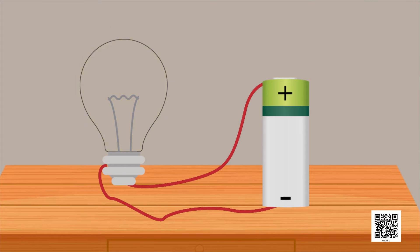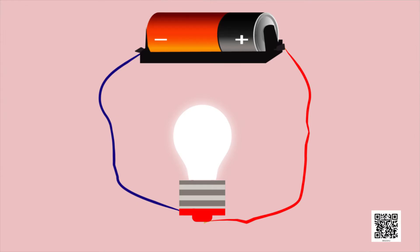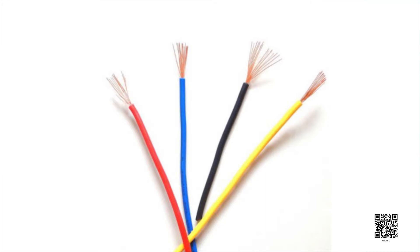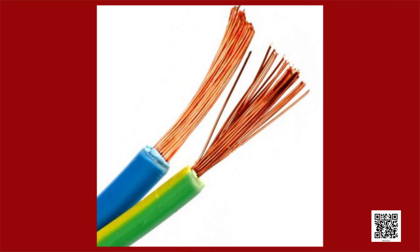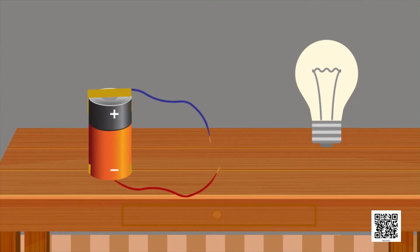When the electric cell stops producing electricity, it has to be replaced with a new one. Now let us try to make an electric bulb light up using an electric cell. Take four lengths of electric wire with differently colored plastic coverings. Remove a little of the plastic covering from each length of wire at the ends to expose the metal wires. Fix the exposed parts of two wires to the cell and the other two to the bulb as shown. Use rubber bands or tape to fix the wires to the cell. Now connect the wires fixed to the bulb with those attached to the cell in six different ways.